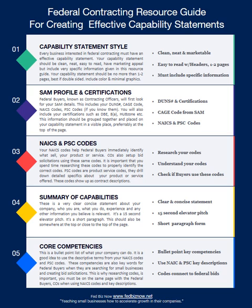Every business that wants to do federal contracting should have a capability statement. The document should be very neat and simple — remember, it's for marketing. You want it to be easy to read, with headers so they can easily find information. These federal buyers are not going to take a lot of time to wade through information, so it needs to be specific, clear, and organized.